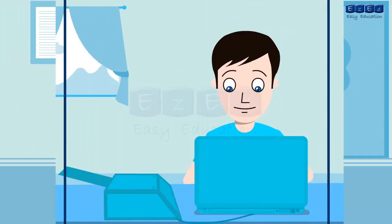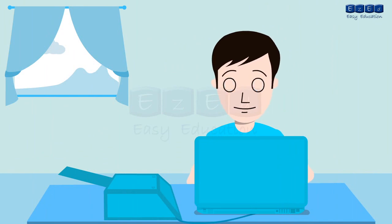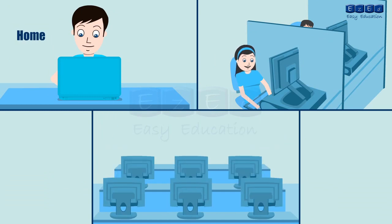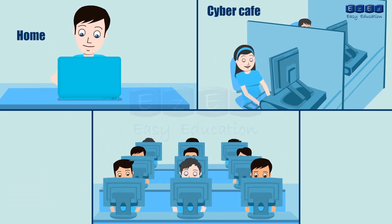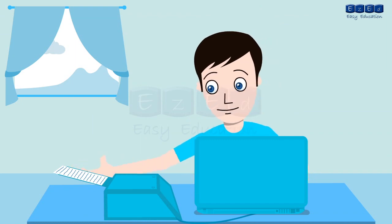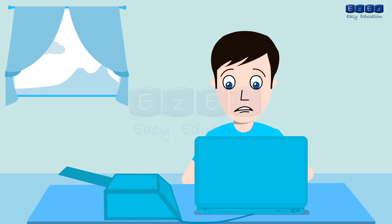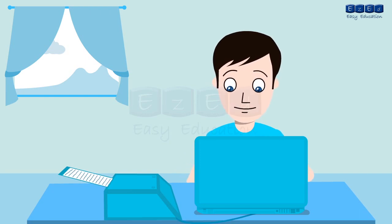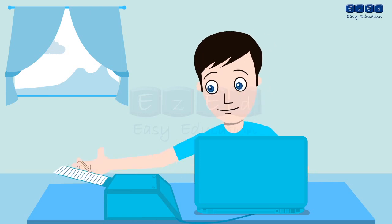Once the candidate has purchased the application kit, they can proceed with the second stage: filling up the application form. The form can be filled from any computer connected to the internet — from home, a cyber cafe, or at any of the ARCs. The candidate fills up the form as per the instructions provided in the kit and then takes a printed copy. The printed application shows all data filled by the candidate and gives the list of documents required to verify the same.